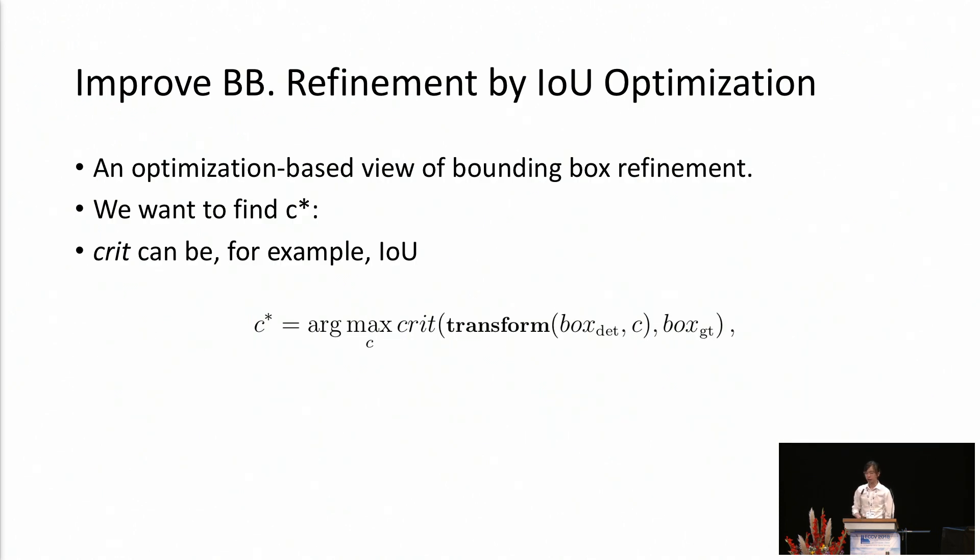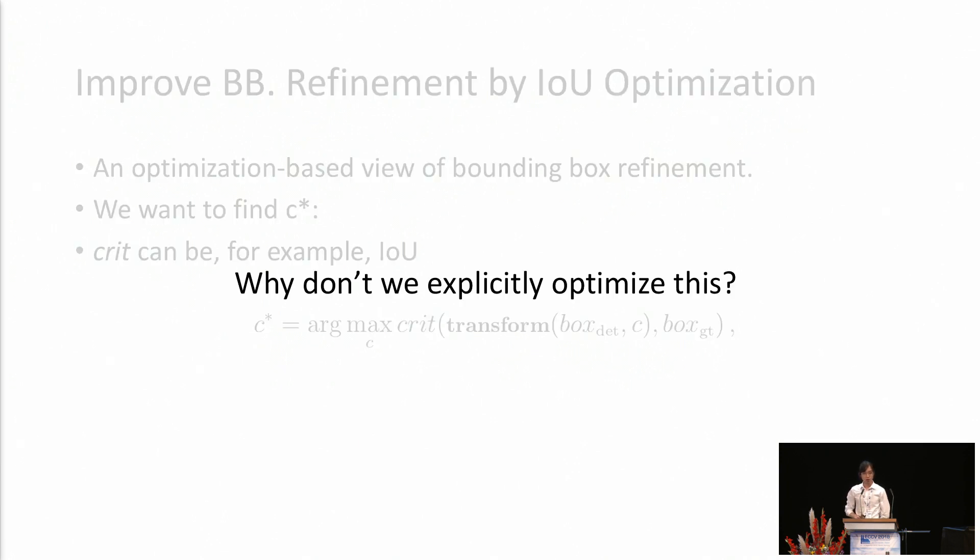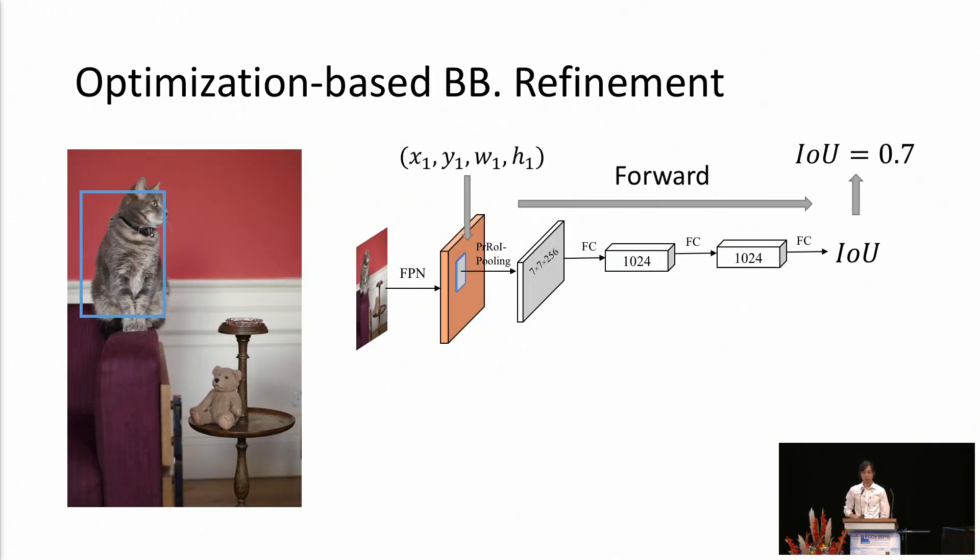Next part, we show how we can improve the bounding box refinement by the technique we call IOU optimization. Here, we propose an optimization-based view for bounding box refinement. Our goal is to find some optimal parameter C star, which maximizes some criterion, for example, the IOU between the transformed detection results and the ground truth. Previously, we solved this via a regression, but now we can directly optimize this. Let's see how it happens.